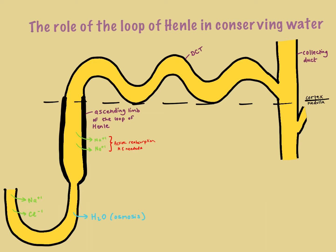Before we dive into the role of antidiuretic hormone in conserving water, just a quick recap. We made a very concentrated solution inside the medulla because of all this active reabsorption of sodium — so the medulla was very salty. Inside the tubule, you have a large amount of dilute urine, because the ascending limb of the loop of Henle is impermeable to water. So sodium is removed and the water stays inside until it reaches the distal convoluted tubule, where water can leave down the water potential gradient.